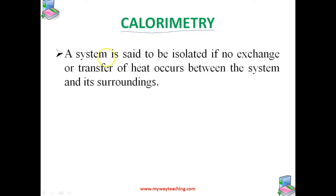A system is said to be isolated if no exchange or transfer of heat occurs between the system and its surrounding. When we call a system an isolated system, there is no exchange or transfer of heat between that system and its surrounding.